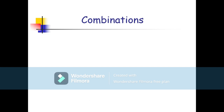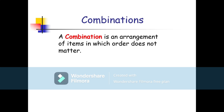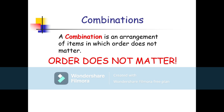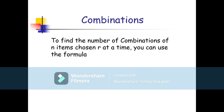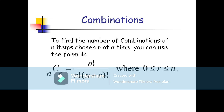Now let's discuss combinations. In a combination, the order does not matter. Since order doesn't matter, there are fewer combinations than permutations — combinations are a subset of permutations. To find the number of combinations of n items chosen r at a time, the formula is nCr = n! / (r! × (n−r)!). The difference from permutation is the additional r! in the denominator. The condition is 0 ≤ r ≤ n.